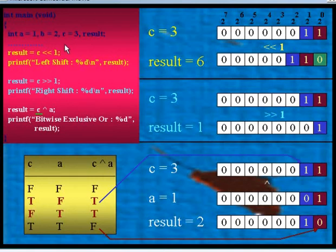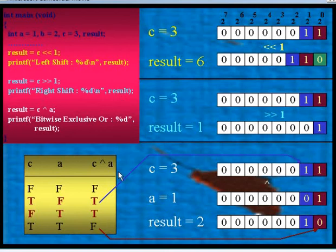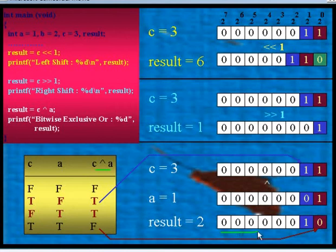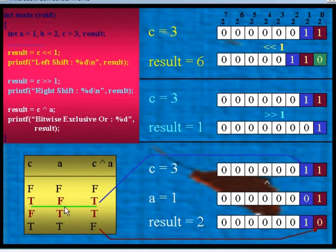Now let us apply this operator. The content of C is 3 and the content of A is 1. Applying bitwise exclusive OR over C and A: for the second bit, C has 1 (true) and A has 0 (false), so true XOR false gives true. Hence the outcome of this bit is 1.